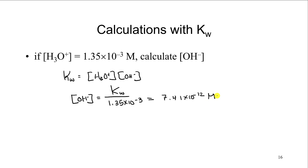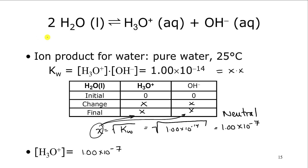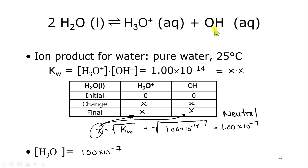There's always hydronium and hydroxide in solution. If you add hydronium to water, all that does is suppress this reaction — it shifts it to the right and reduces the amount of hydroxide present in solution. Because of this self-ionization reaction, hydronium and hydroxide are always related to each other by the Kw expression.